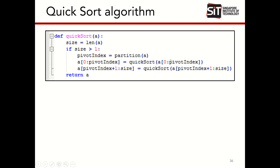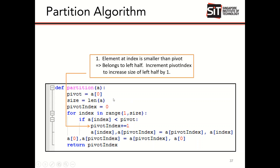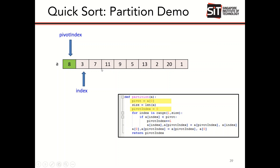Subsequently, you recursively quicksort the left side and quicksort the right side. So the structure is: partition the array, quicksort the left, quicksort the right. The partition algorithm is a bit complicated — it will be clearer as we go through the example now. Assuming we have this array, we first choose the first number, which is 8, to be the pivot. We start the index at the second element and try to arrange it so that everything to the left is less than 8 and everything to the right is greater than 8.